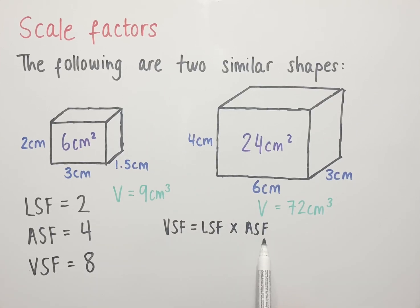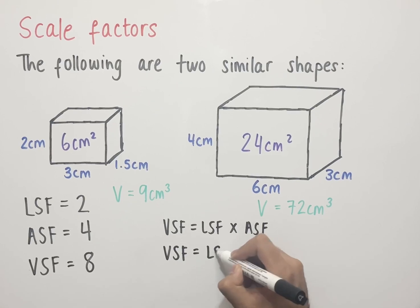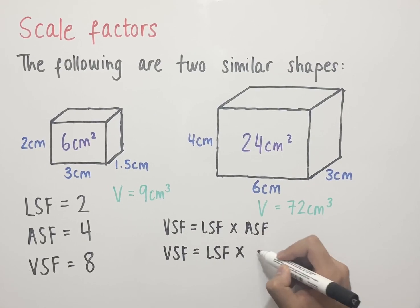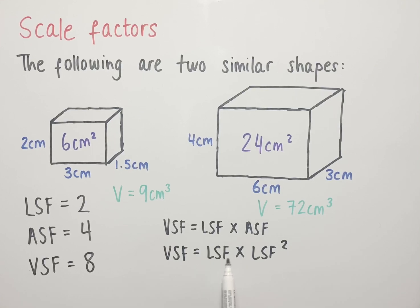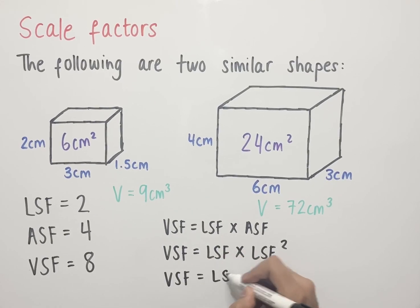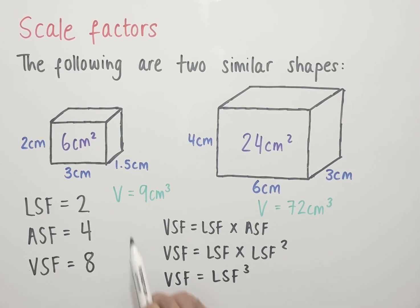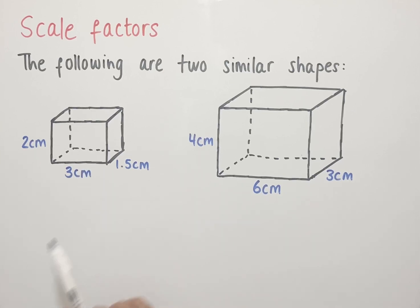Since the area scale factor can be written as LSF squared, substituting in gives: VSF = LSF × LSF², which simplifies to VSF = LSF³ — consistent with what we showed before. The area scale factor can also be applied to the surface area of two similar 3D shapes.